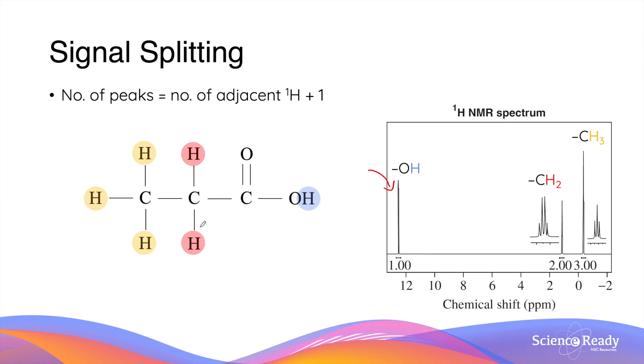Now let's look at the two protons on the second carbon atom. On the adjacent carbon atom, that is the third carbon atom, there are a total of three protons. Since the number of peaks is equal to the number of adjacent protons, which is three, plus one, the signals produced by these two red protons will be four, and this is shown here as a quartet.